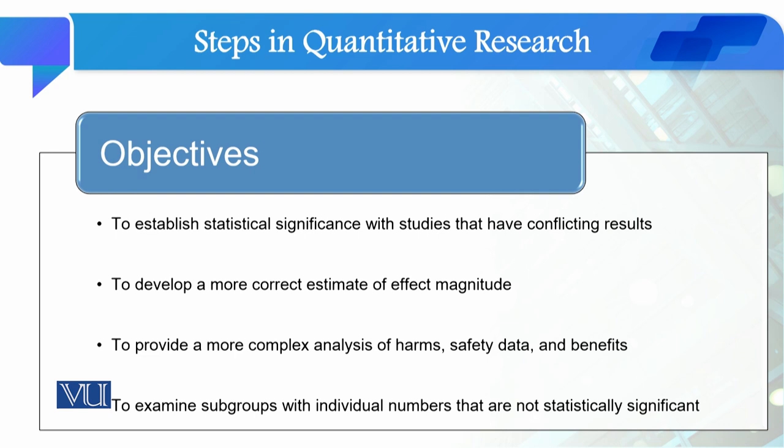ہم meta-analysis کیوں کرتے ہیں؟ اس کا پہلا objective ہے: to establish statistical significance with studies that have conflicting results۔ Meta-analysis ایسی situations میں کیا جاتا ہے جب ایک branch of studies کسی particular hypothesis کو support کر رہی ہو جبکہ دوسری branch اسے reject کر رہی ہو۔ ایسی situations میں ہم meta-analysis conduct کرتے ہیں تاکہ ان ساری studies کو ایک single study میں شامل کر کے دیکھ سکیں کہ results کیا بنتے ہیں۔